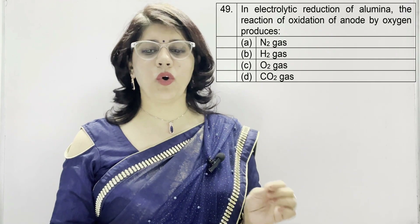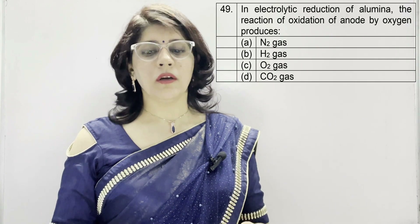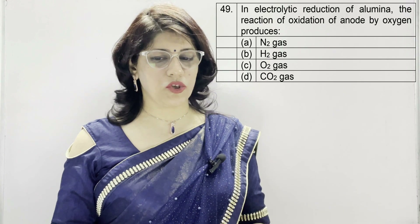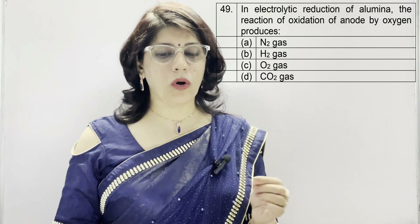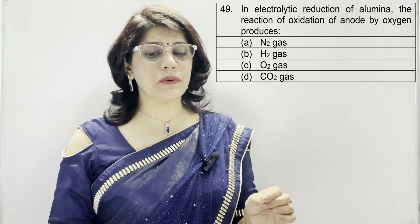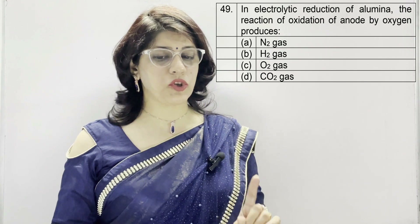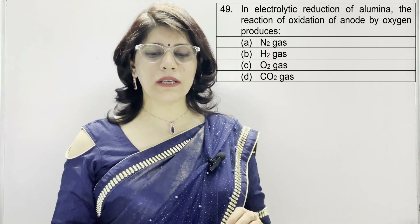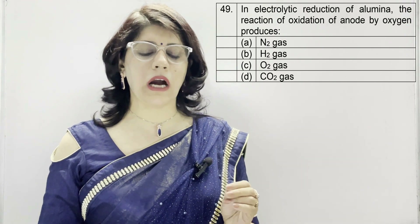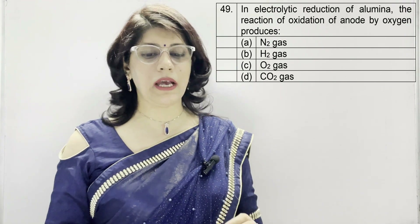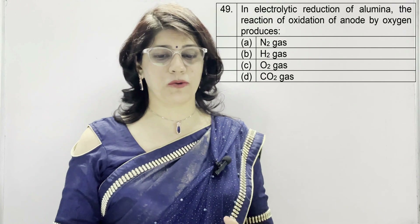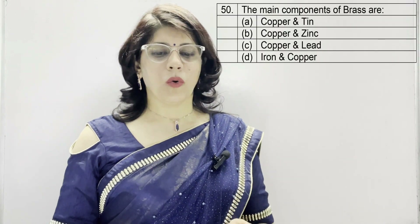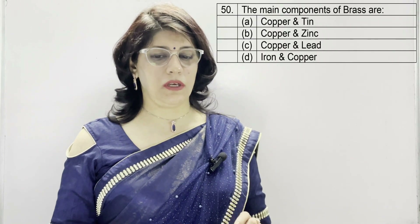In question number 49: in electrolytic reduction of alumina, the reaction of oxidation of the anode by oxygen produces — A: N2 gas, B: H2 gas, C: O2 gas, D: carbon dioxide gas. The correct option is carbon dioxide gas.